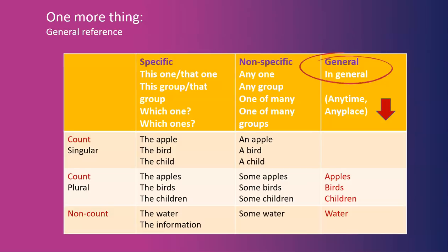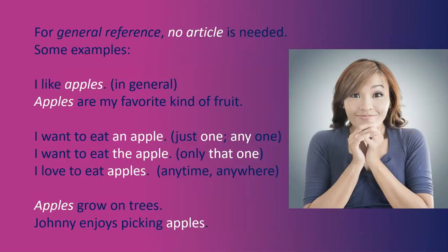Let's talk next about general reference. This is on the right-hand side of the table. In general, we're talking about things like any time or any place — not a specific situation, or not here and now. Sometimes it can just be in our imagination. We use words like 'apples,' 'birds,' 'children,' 'water.' Notice there are no articles here. For general reference, no article is needed.